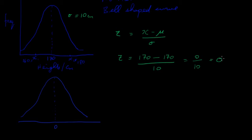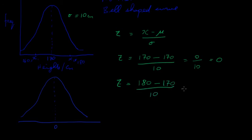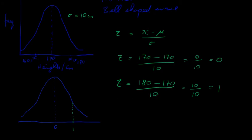Now let's take x2 = 180 centimeters. z = (180 − 170) / 10 = 10/10 = 1. So 180 centimeters is 1 standard deviation above the mean — it's +1 in terms of z value. We've divided the standard deviation into the difference between the x value and the mean.